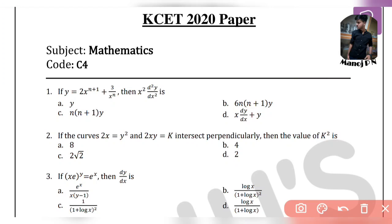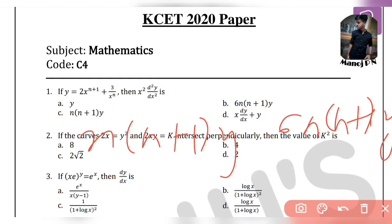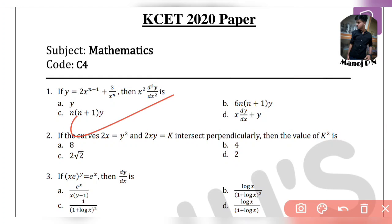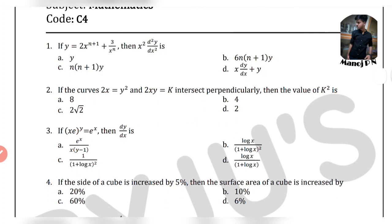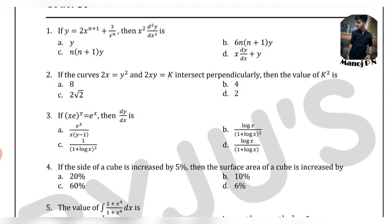Looking at option C: n(n+1)y. Option B is 6n(n+1)y. Comparing these, if we insert n(n+1)y, it is clear in its solution. So option C, that is n(n+1)y, is our answer. I hope this will be understood.